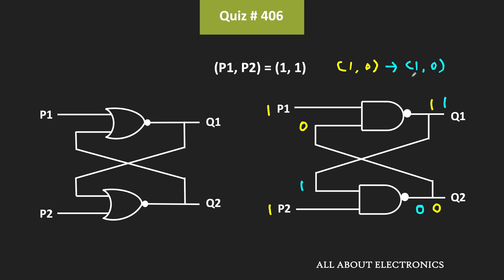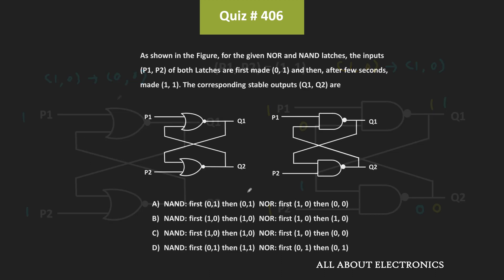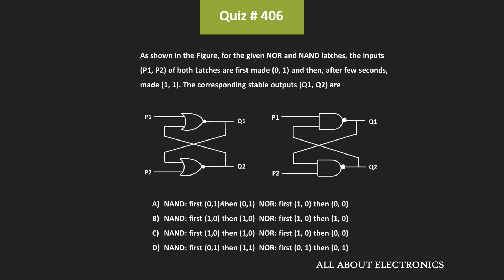On the other hand, for this NOR gate based latch, initially the outputs were 1, 0, and once P1 and P2 become 1, 1, then the outputs become 0, 0. So from this we can say that, for the given question, option C is the correct answer.